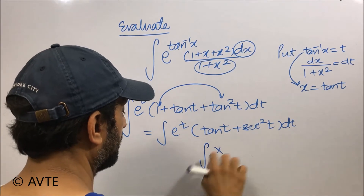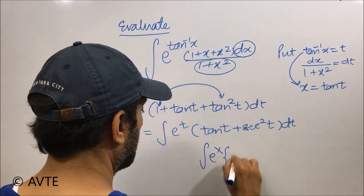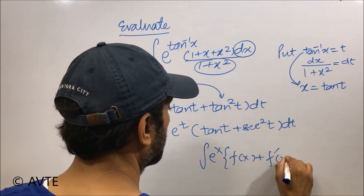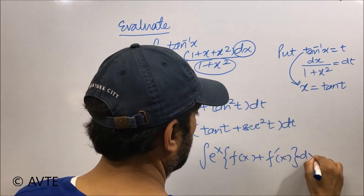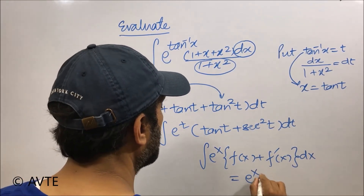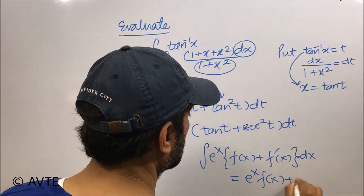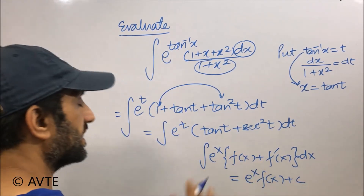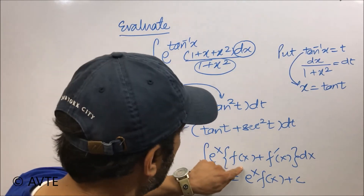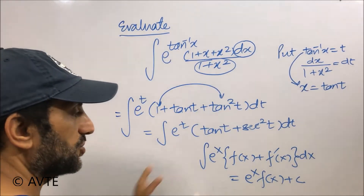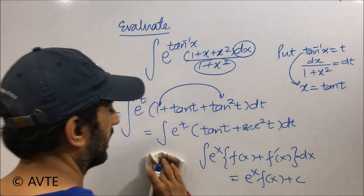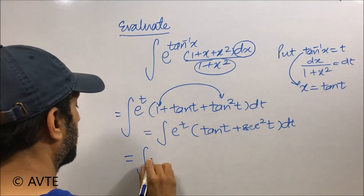You may use the direct formula: if we have e to the power x multiplied by a function plus its derivative, we can write the direct answer as e^x times f(x) plus c. Here you need to identify what f(x) is and what its derivative is. Alternatively, you can expand the bracket using integration by parts.